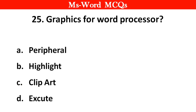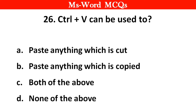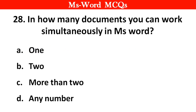Next question: Graphics for word processors — right answer is option C, clip art. Next question: What is the extension of file created in MS Word 1997 to 2003? Right answer is option B, .doc. Next question: Control + V can be used to — right answer is option C, both of the above. Next question: Control + S is used to — right answer is option A, save documents with the same name.